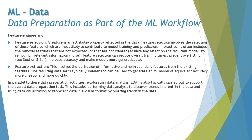Today we'll continue with feature engineering, specifically feature selection and feature extraction. Feature engineering is generally broken down into these two sub-segments. A feature is an attribute or property reflected in the data. Feature selection involves selecting those features most likely to contribute to model training and prediction, and often includes removing features not expected to have any effect on the model. By removing irrelevant information — referred to as noise — feature selection can reduce overall training times, prevent overfitting, and increase accuracy, making models more generalizable.